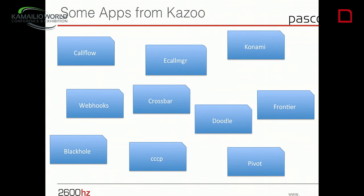Then we have eCallManager — it's an Erlang call manager that interacts with FreeSwitch. It has an ESL connection to FreeSwitch, gives commands, and receives events from FreeSwitch. What it does after is simply publish messages on the AMQP bus. And it listens for messages from the AMQP bus and gives instructions to FreeSwitch.